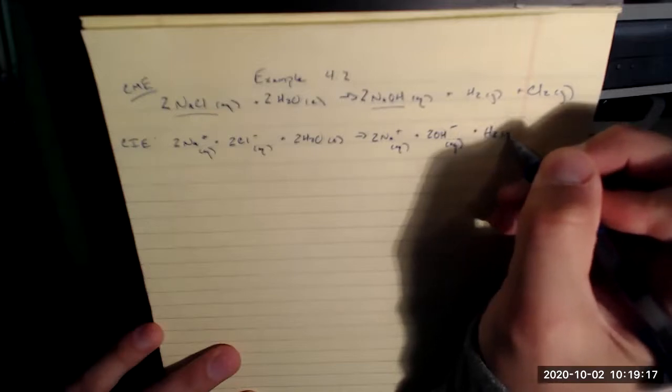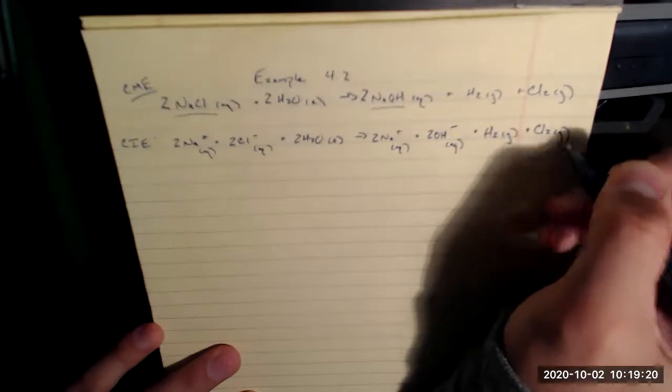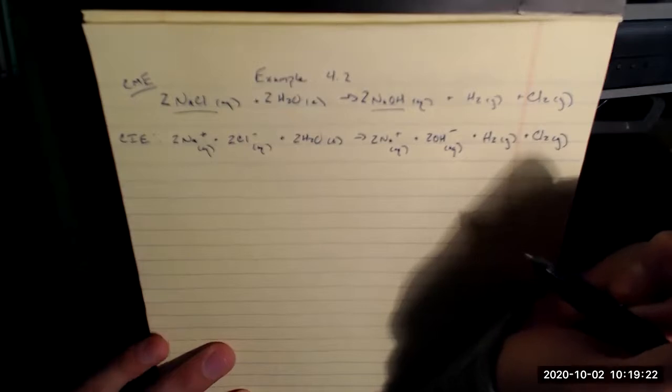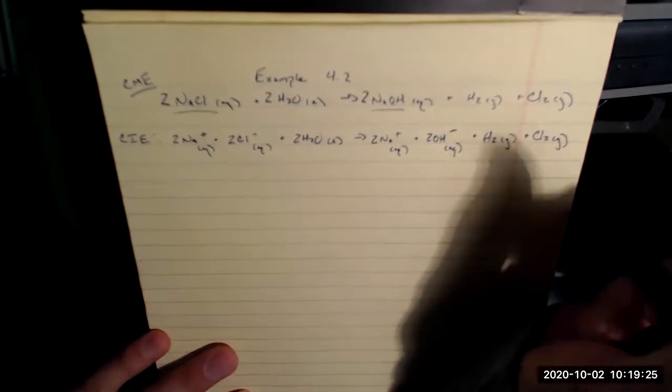H2 and Cl2 are gases, so those are going to stay as they are. Gases don't split up, only aqueous and ionic. So that's the complete ionic equation.